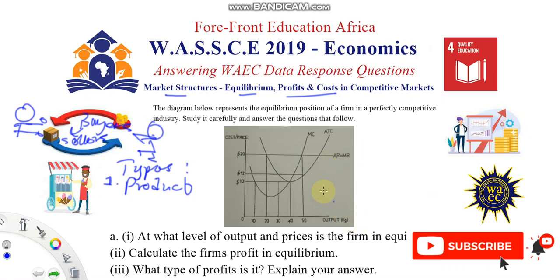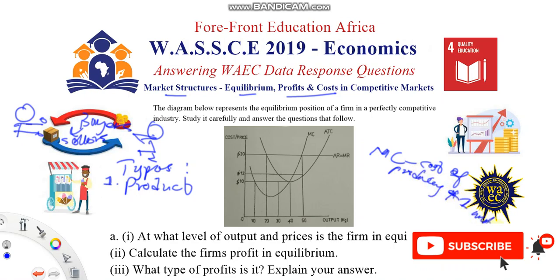The marginal cost is the cost of producing one more unit of output. The average total cost is simply the total cost of production divided by the number of units produced — for example, if it costs a certain amount to produce 10 eggs per week, you divide the total cost by the number of units to get the average total cost.